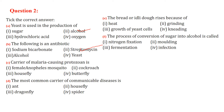The carrier of malaria-causing protozoa is the female Anopheles mosquito. The most common carrier of communicable disease is the housefly. The bread or idli dough rises because of the growth of yeast cells. The process of conversion of sugar into alcohol is called fermentation.